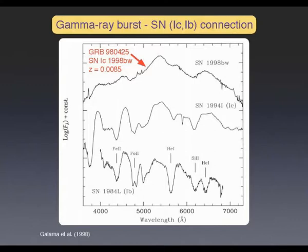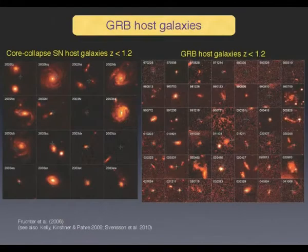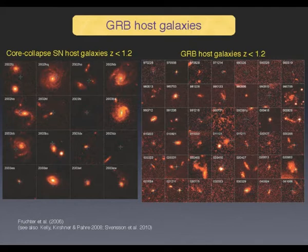This is the first supernova detected associated with a gamma-ray burst — it's a bright event. A few years ago, Fructher and collaborators investigated what kind of galaxies would host GRBs and these supernova explosions. This was possible for GRBs at relatively low redshift, below 1.2, and he made a comparison with host galaxies of normal core-collapse supernovae.